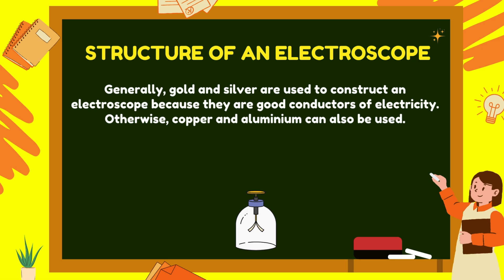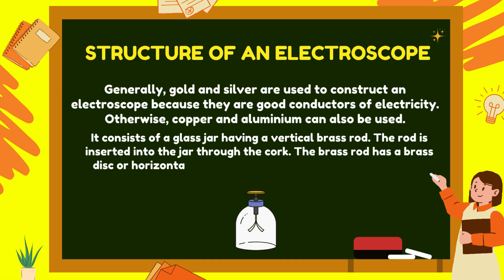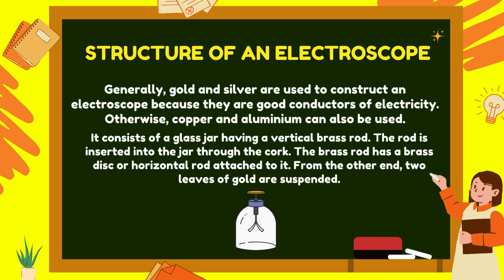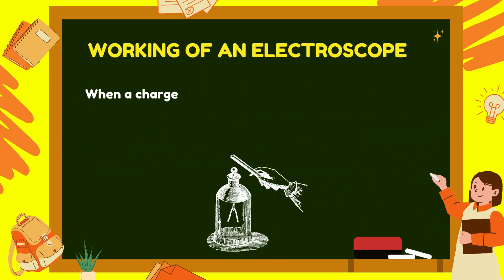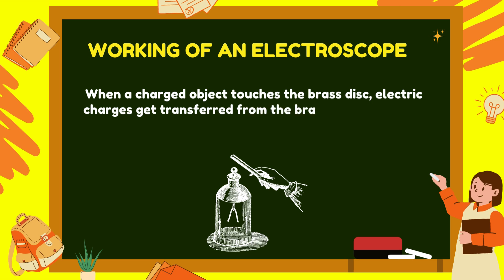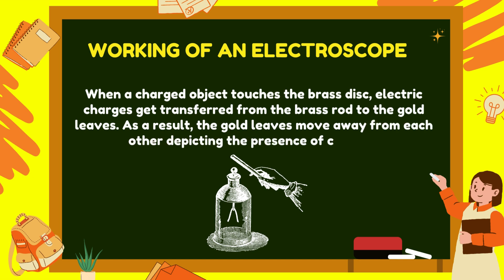The electroscope consists of a glass jar with a vertical brass rod inserted through a cork. The brass rod has a brass disc or horizontal rod attached at the top, and two gold leaves suspended from the other end. When a charged object touches the brass disc, electric charges get transferred from the brass rod to the gold leaves. As a result, the gold leaves move away from each other, depicting the presence of charges.